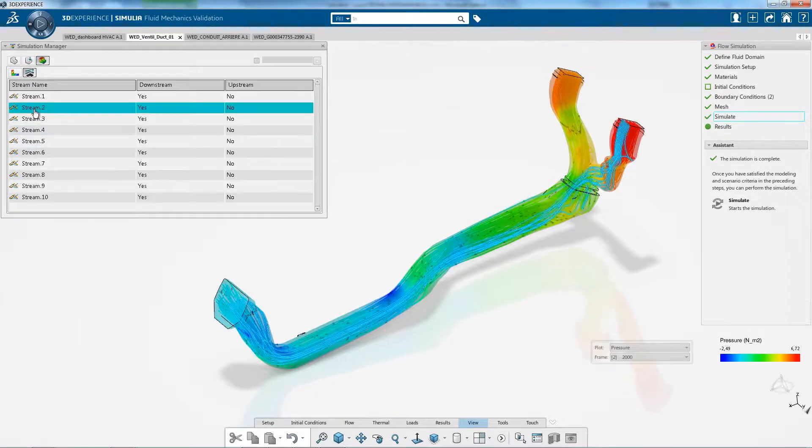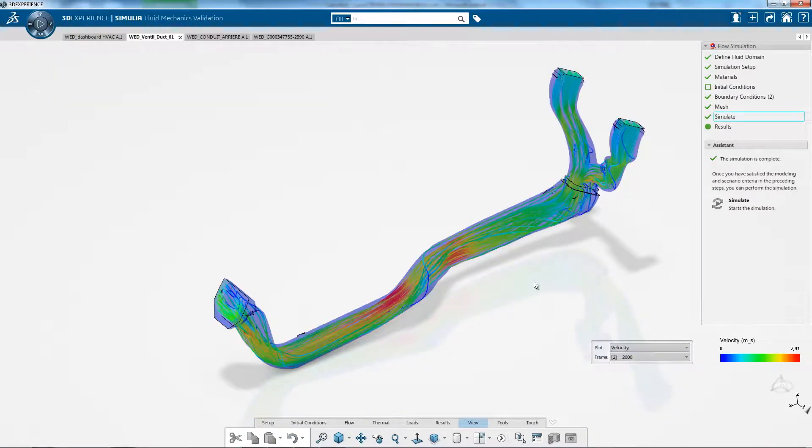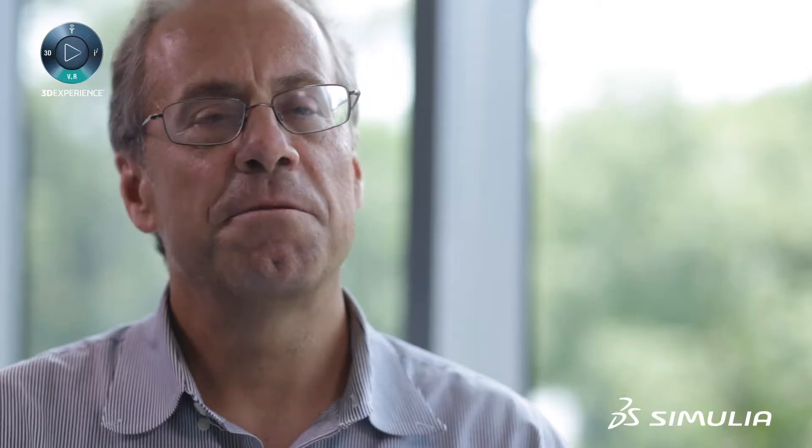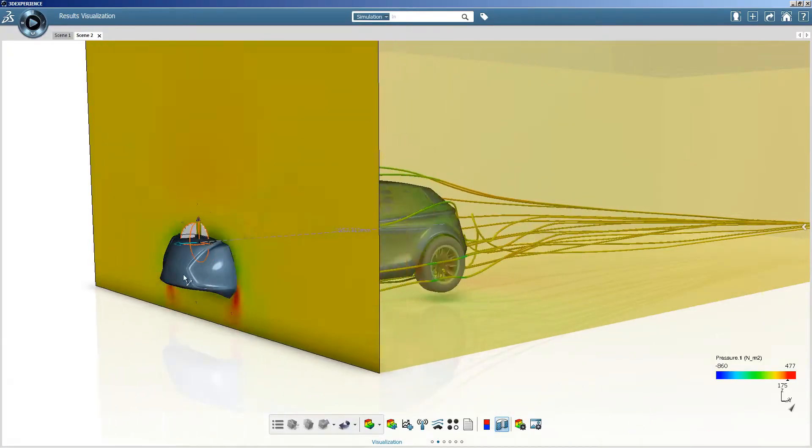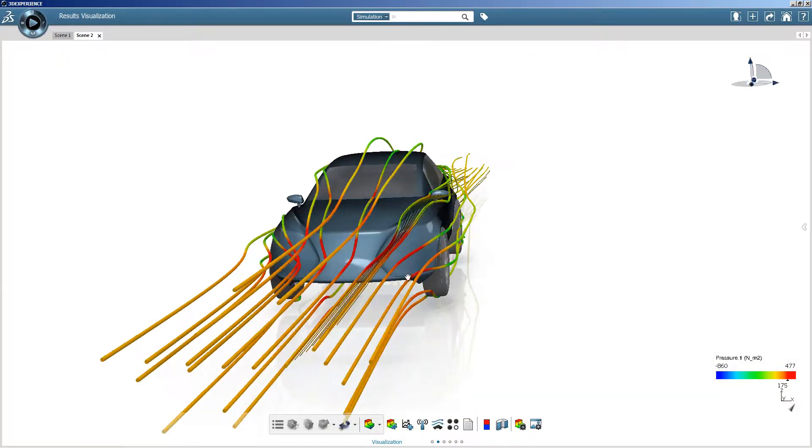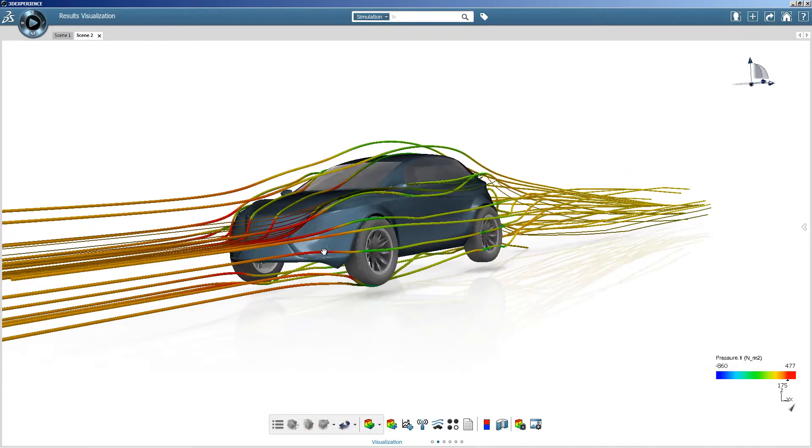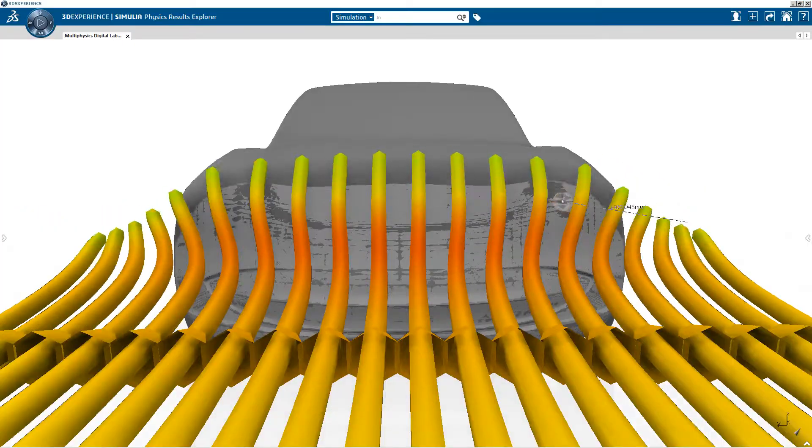It's used for diverse applications such as HVAC, aerodynamics, microfluidics, and it's used in all the industries that we serve in Simulia including aerospace, automotive, consumer packaged goods, high-tech, life sciences, natural resources, and oil and gas.